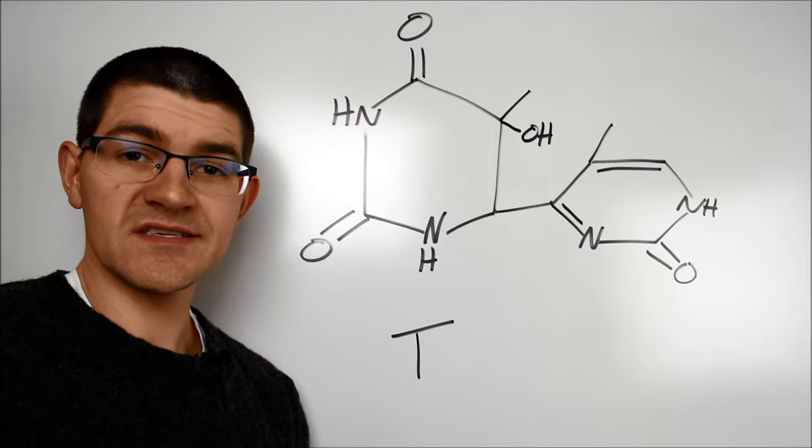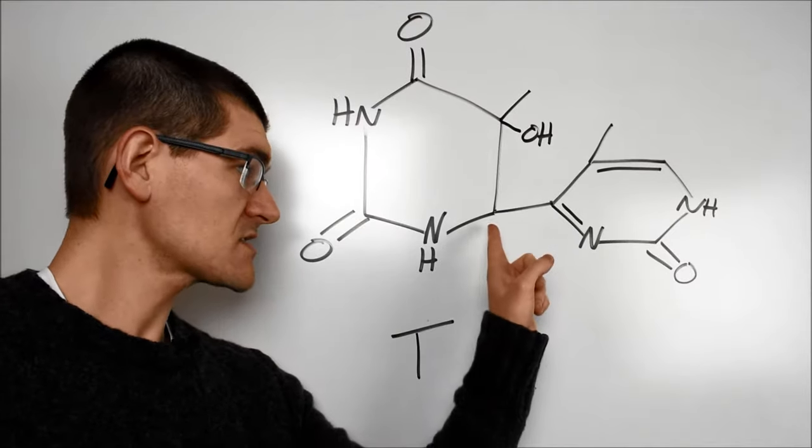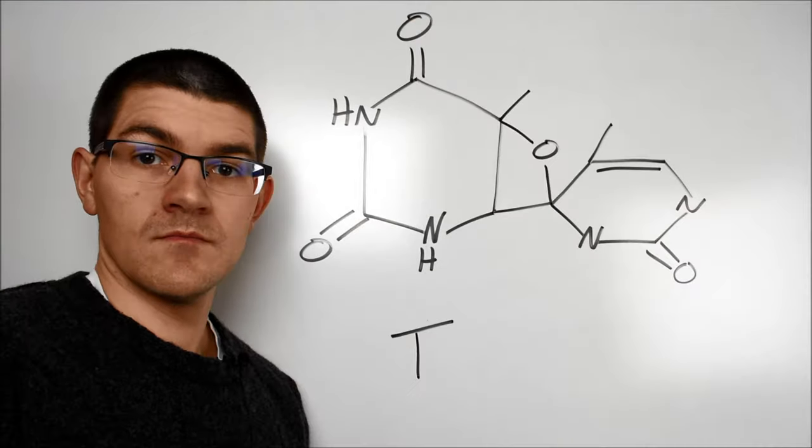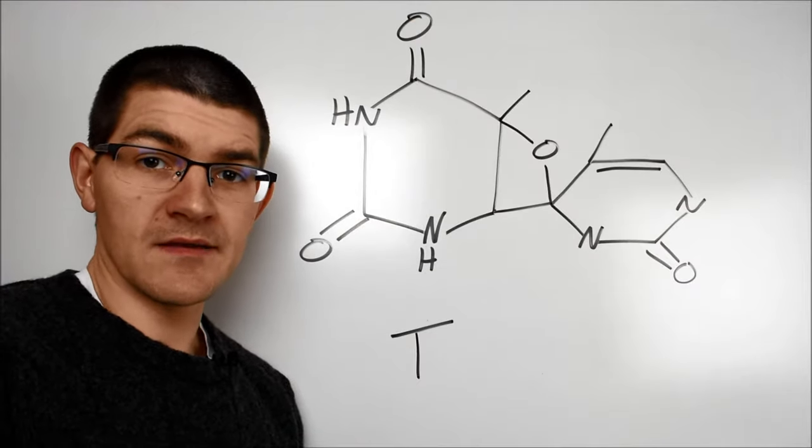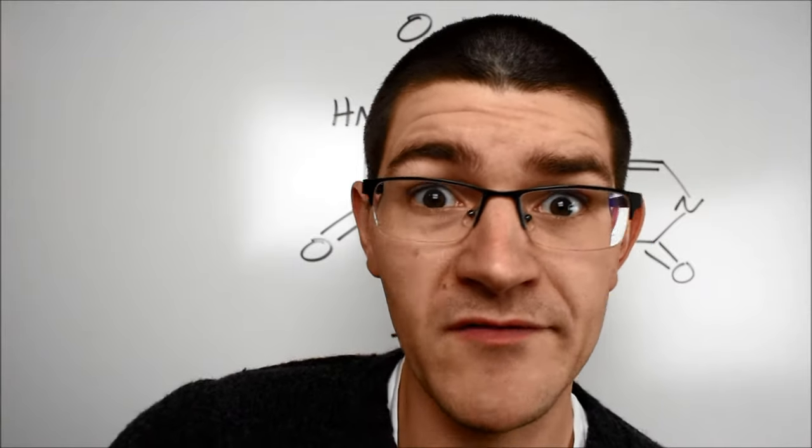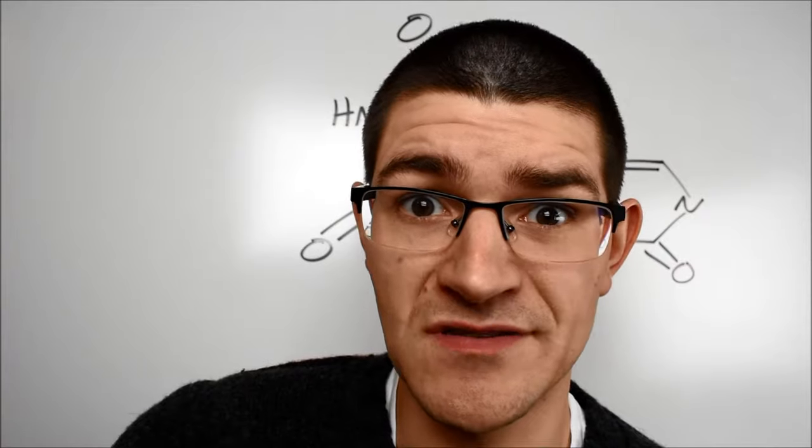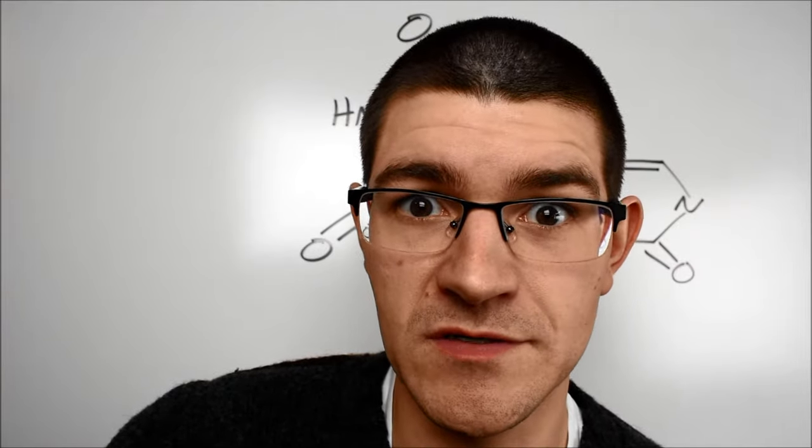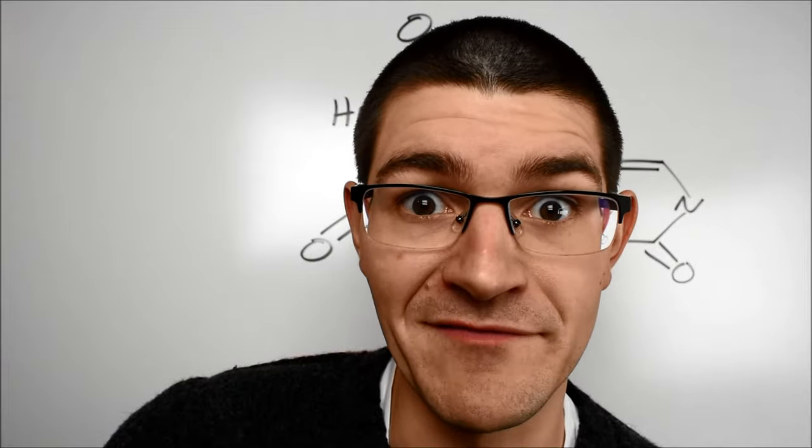Another pyrimidine dimer is called a 6-4 photoproduct. The 6-carbon of one pyrimidine base attacks the 4-carbon of a second one. According to this one website online, listen, this is supposed to be a video about sunscreen and we're debating the mechanism of a minor product from pyrimidine nucleic acid base mutations. We're so far off the rails right now, I'm not really looking for secondary sources. So forgive me if I'm not rigorously fact-checking.